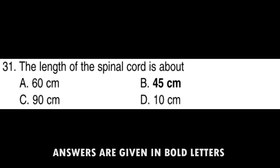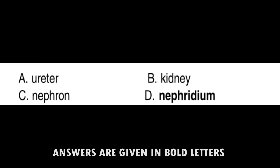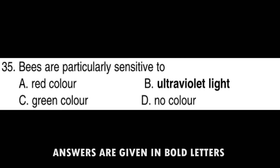Birds excrete nitrogenous waste in the form of Uric acid. The length of spinal cord is 45 cm. Rabies is transmitted by infected mad dogs. The excretory organ of earthworm is Nephridium. The upper heart chambers are called Atria.